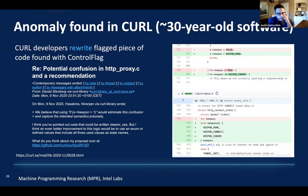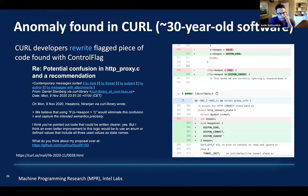Let's take a look at one of these code anomalies. There's a piece of software called Curl — a client URL — that's been around about 30 years and is supposedly used upwards of a billion times a day. We're probably using Curl right now on Zoom. This is very hardened production quality code. What we found with an analysis of Curl is this sort of interesting quandary.